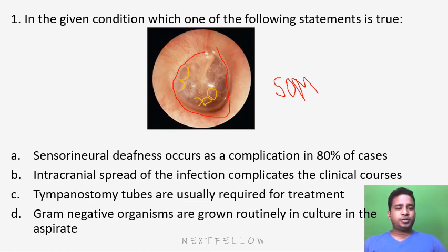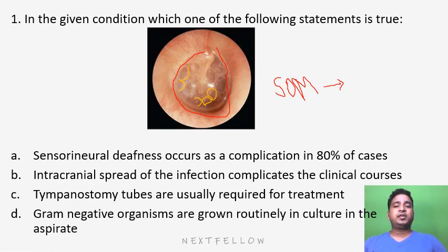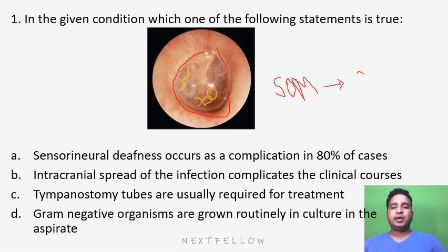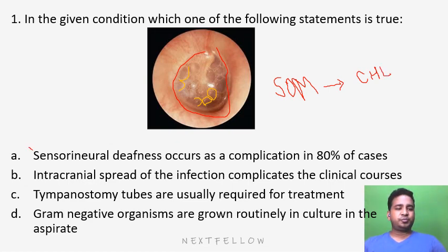Option number one: sensory neural deafness occurs as a complication in 80% of cases. Serous otitis media is a condition of the middle ear, and in middle ear pathology the most common hearing loss is conductive hearing loss. So definitely in serous otitis media there is no sensorineural hearing loss — it is only conductive hearing loss. So this option seems to be wrong.